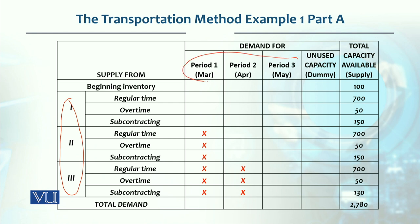जो rows हैं supply के periods दिये हुए हैं और जो columns के अंदर दिये हुए हैं वो demand के periods दिये हुए हैं कि हर period में क्या demand है। अब इसके अंदर एक और चीज़ देखने वाली है कि यहाँ — The rows represent supply periods and the columns represent demand periods showing what demand is in each period.